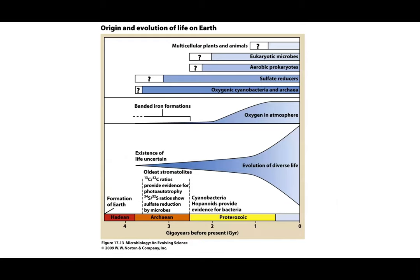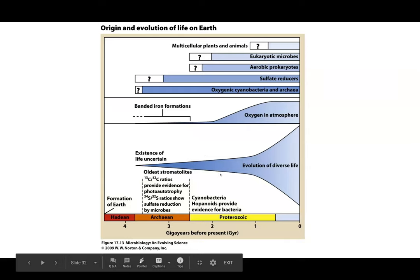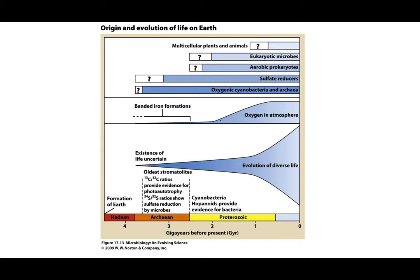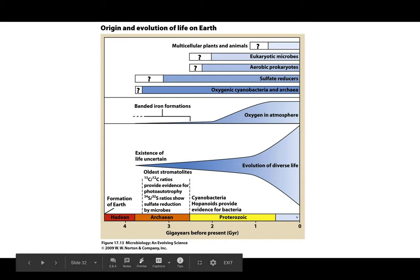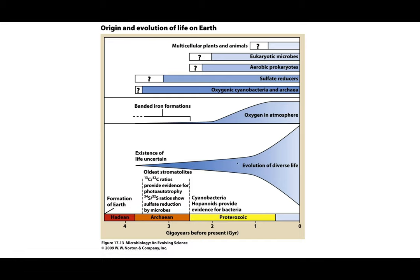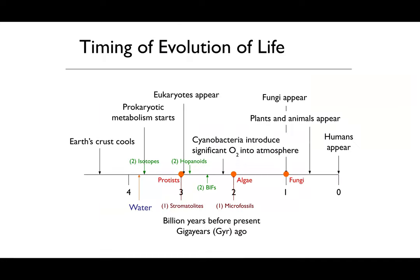As oxygen accumulates, the evolution of life on this planet explodes—oxygen is a huge driving force in life's evolution. Our first evidence of protists is about 3 billion years ago, algae about 2 billion years ago, and fungi about 1 billion years ago. It's likely bacteria and archaea evolved right around when early life started.